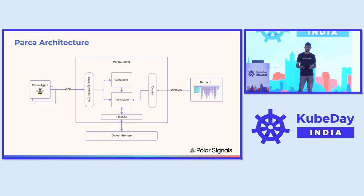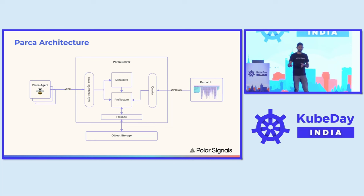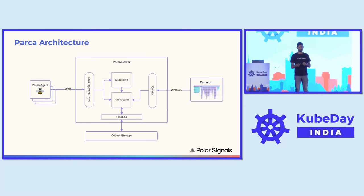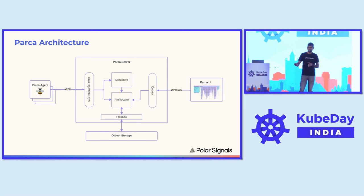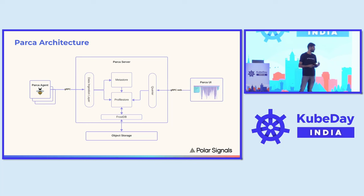Let's have a quick look at Parca's architecture. It has a very simple, straightforward architecture. The eBPF-based agent collects profiles and sends them to the Parca server, where we process the data — doing symbolization and other enhancements — and save it to the profile store, which is backed by FrostDB. FrostDB is a custom-built columnar embeddable store specifically developed at Polar Signals, and it stores data into the object store. When querying from the UI, requests go to the query layer, which retrieves necessary data from the profile store, and we render cool reports on the UI.